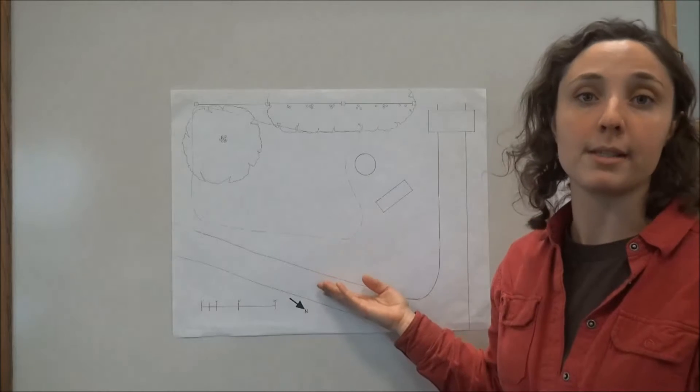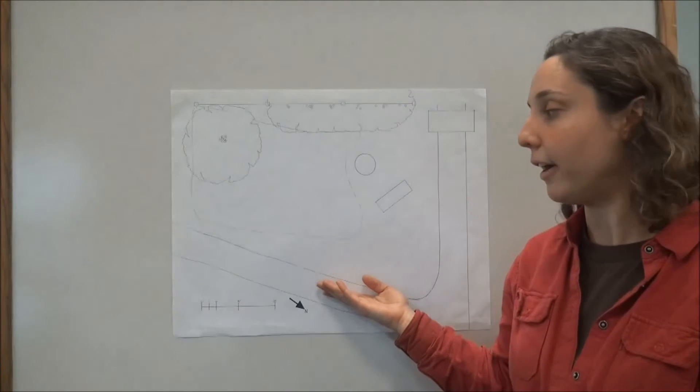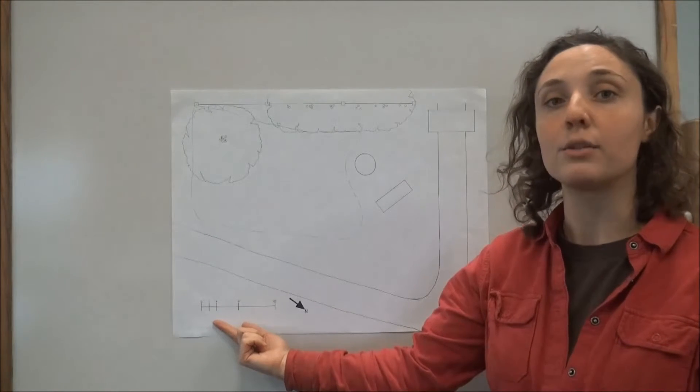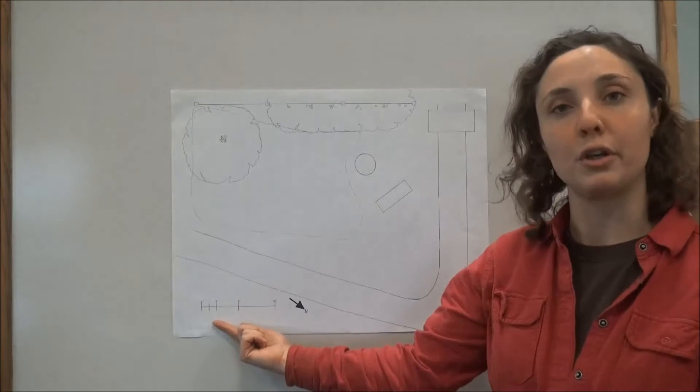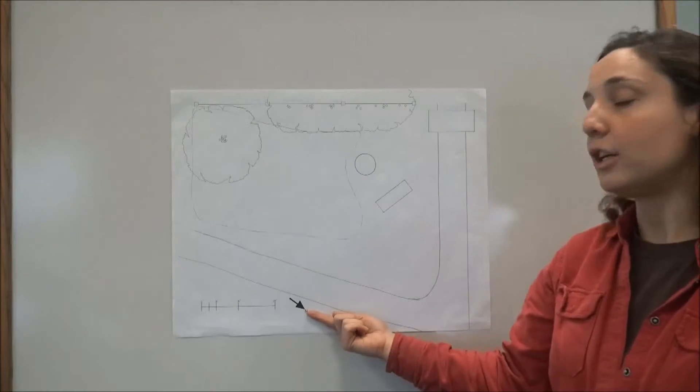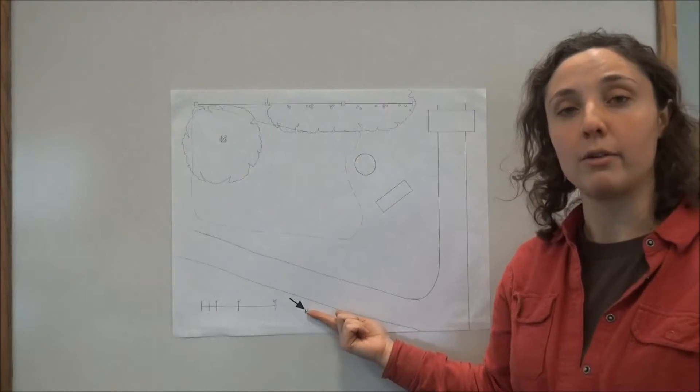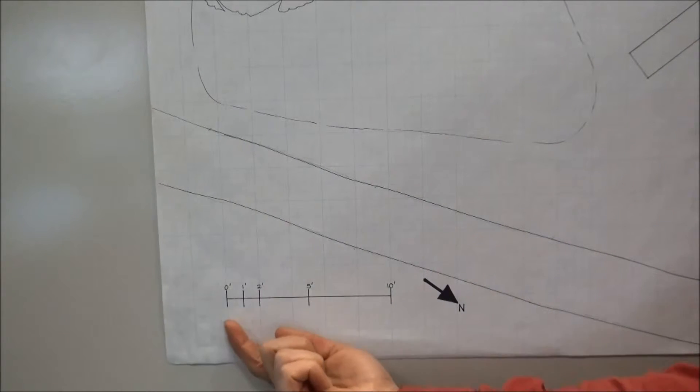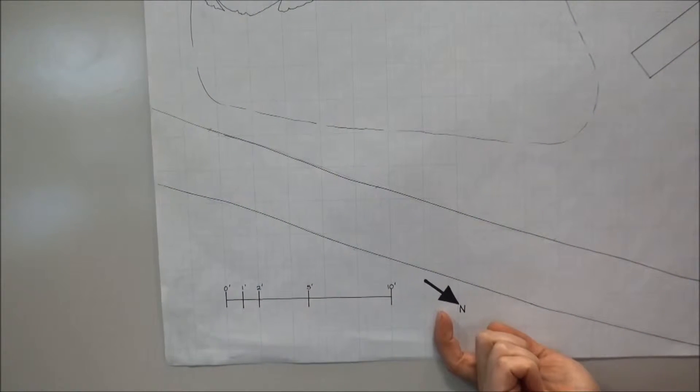Now something that you want to do for all of your base maps is you want to make sure they have labels, and this map doesn't have labels yet so we'll do that together. You also want to make sure your map has a scale, and that's really easy to make. I'll show you how to do that. And you also want to make sure it has a north arrow. So those are the three elements your base map must have.